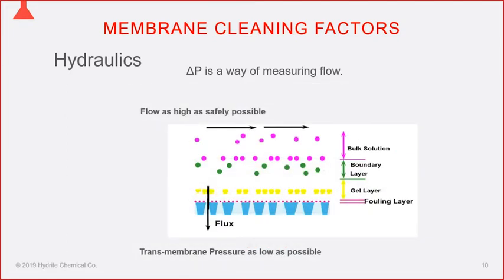The proper flow equation is used because placing a $3,000+ flow meter on each loop pump would greatly increase system cost. We can determine proper flow using pressure drop instead of a flow meter — that was simply a cost-saving measure in system design. During CIP, the baseline pressure will be lower than during production, but cross flow will be higher because you want flow as high as safely possible.